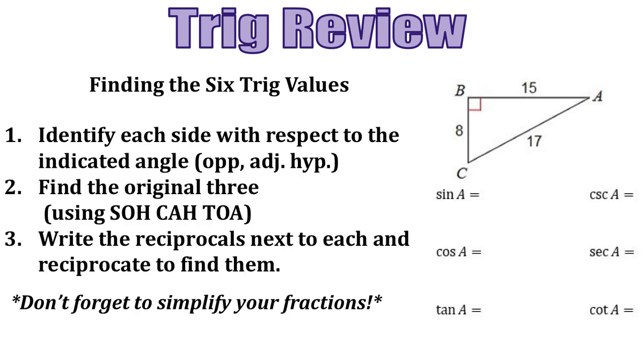So if you're being asked about the six trig functions from a right triangle, the first thing you should do is make sure you identify which side is which. What's the opposite? What's the adjacent? What's the hypotenuse? And remember, opposite and adjacent are going to depend on your angle. Then you can find the original three: sine, cosine, and tangent.